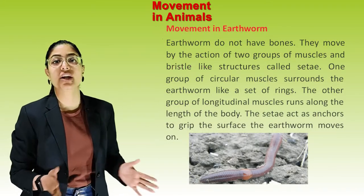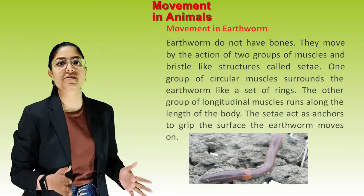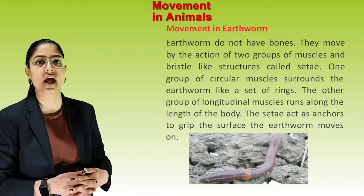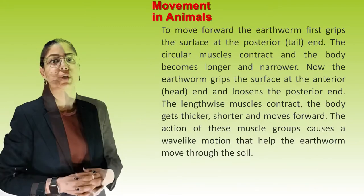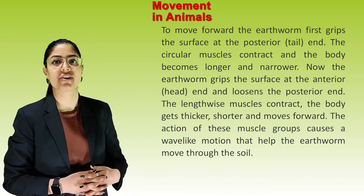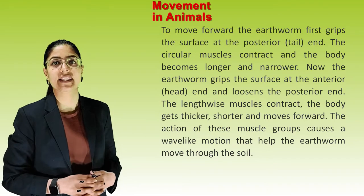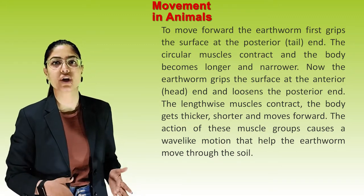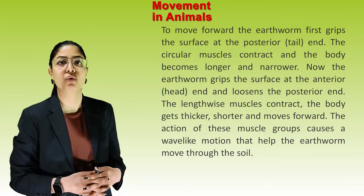Movement in earthworm. Earthworms do not have bones. They move by the action of two groups of muscles and bristle-like structures called seti. One group of circular muscles surrounds the earthworm like a set of rings; the other group of longitudinal muscles runs along the length of the body. The seti act as an anchor to grip the surface. To move forward, the earthworm grips the surface at the posterior tail end. The circular muscles contract and the body becomes longer and narrower. Then the earthworm grips at the anterior end and loosens the posterior end; the longitudinal muscles contract, the body gets thicker and shorter and moves forward. This wave-like motion helps the earthworm move through the soil.